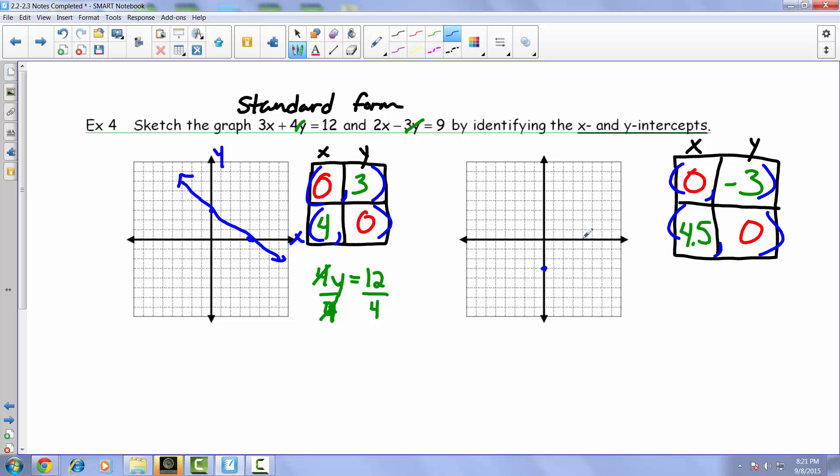4.5. There is that point. And all we have to do is connect the two dots. So again, this was actually our x-intercept. This one would have been our y-intercept. So again, that is example 4 from our 2.2, 2.3 set of notes.